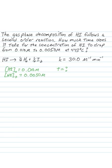So the equation that we want to use is 1 over the concentration of HI at time T minus 1 over concentration of HI at time zero. And that's going to be equal to K times T.